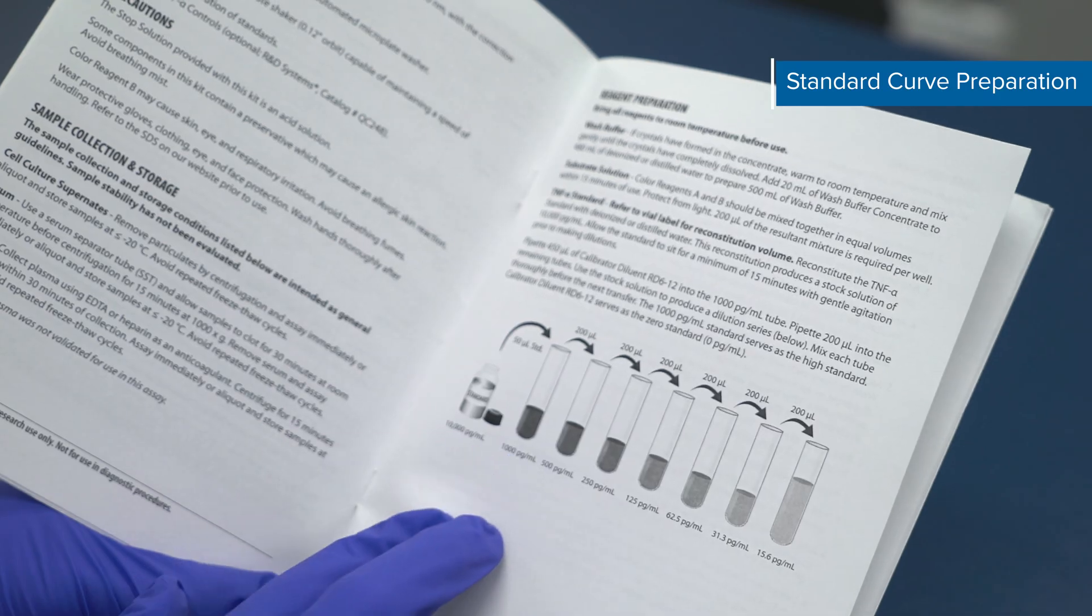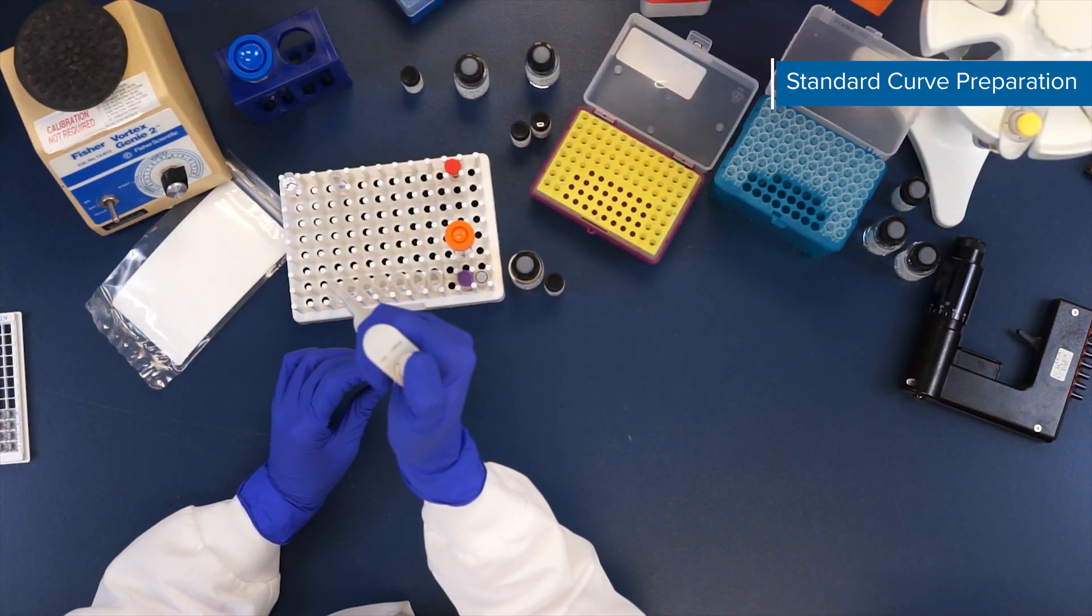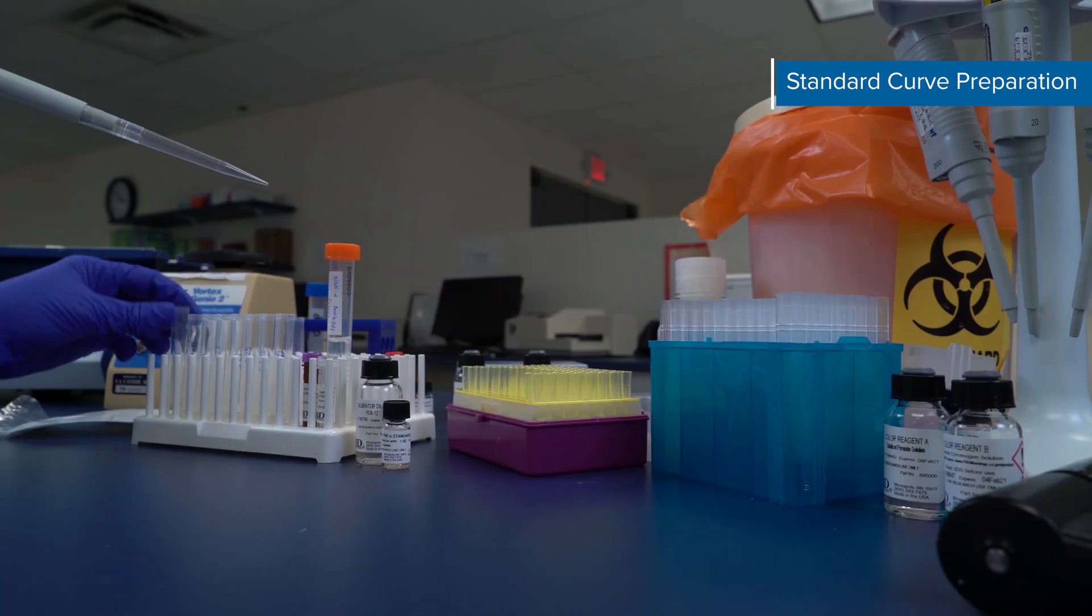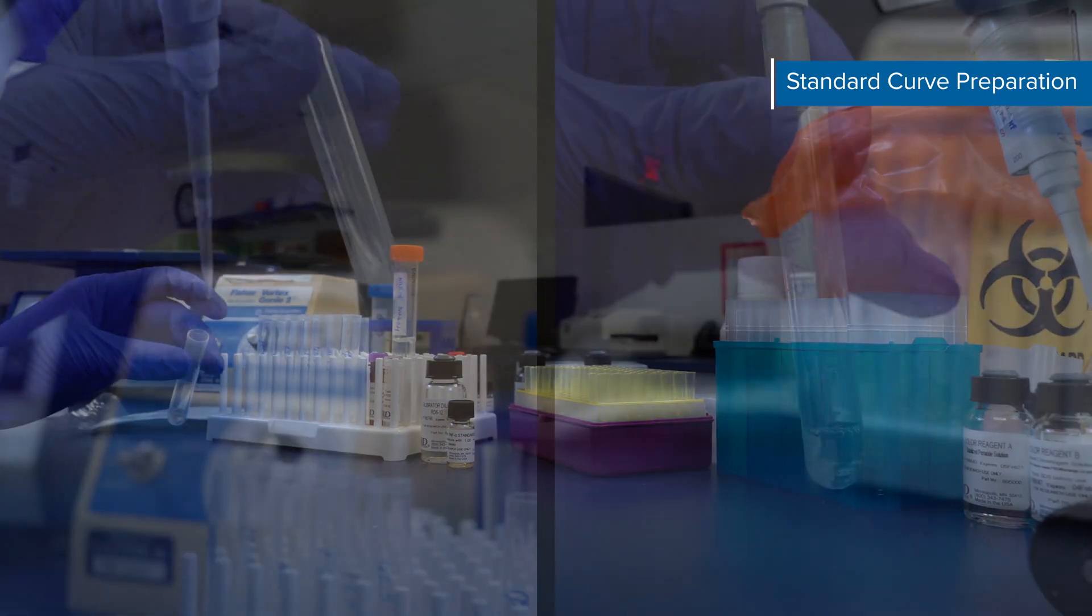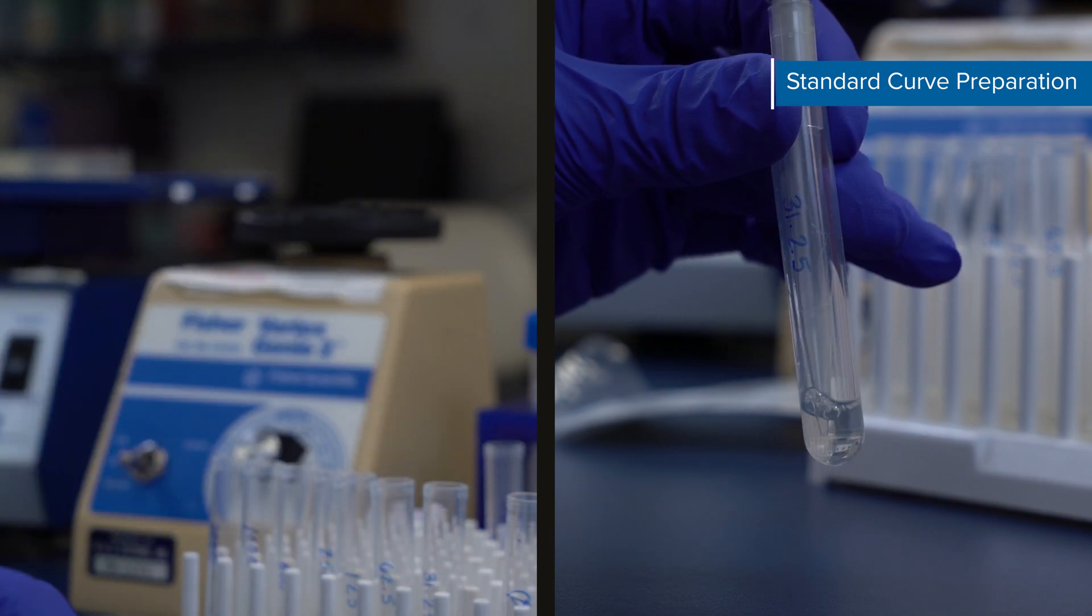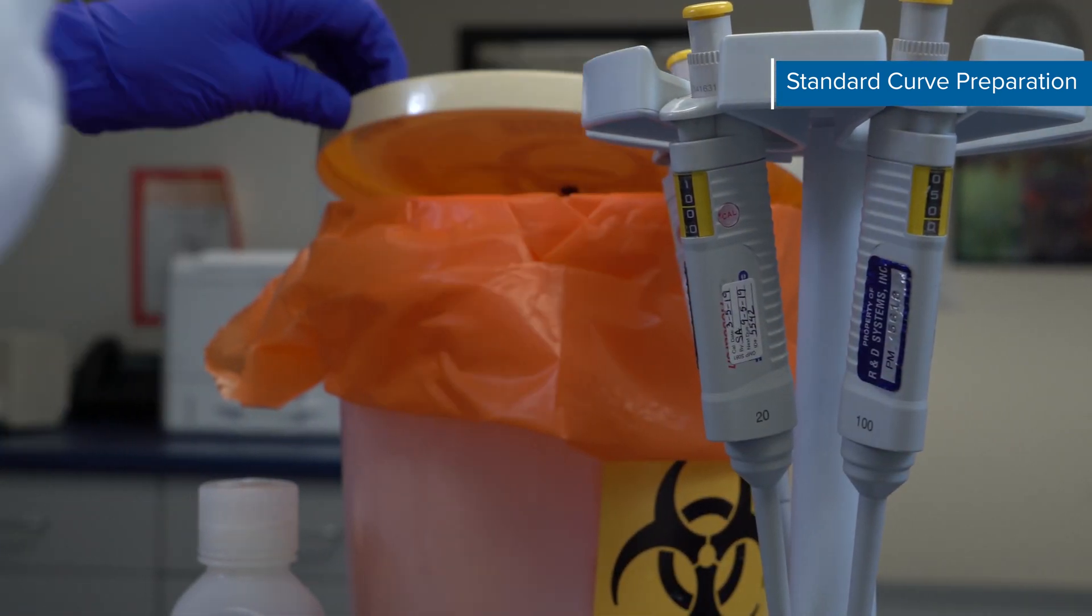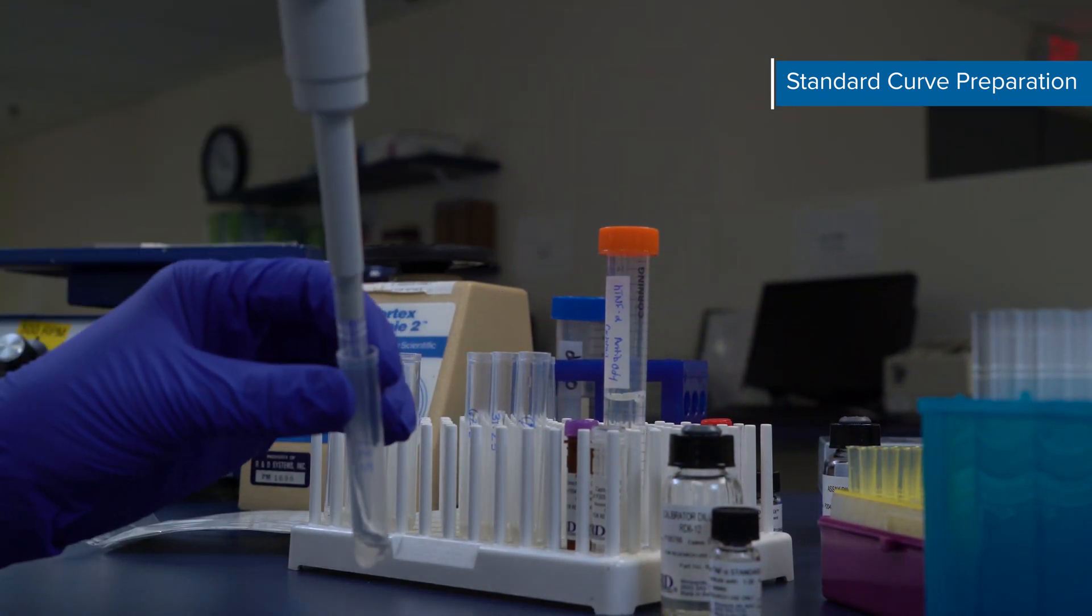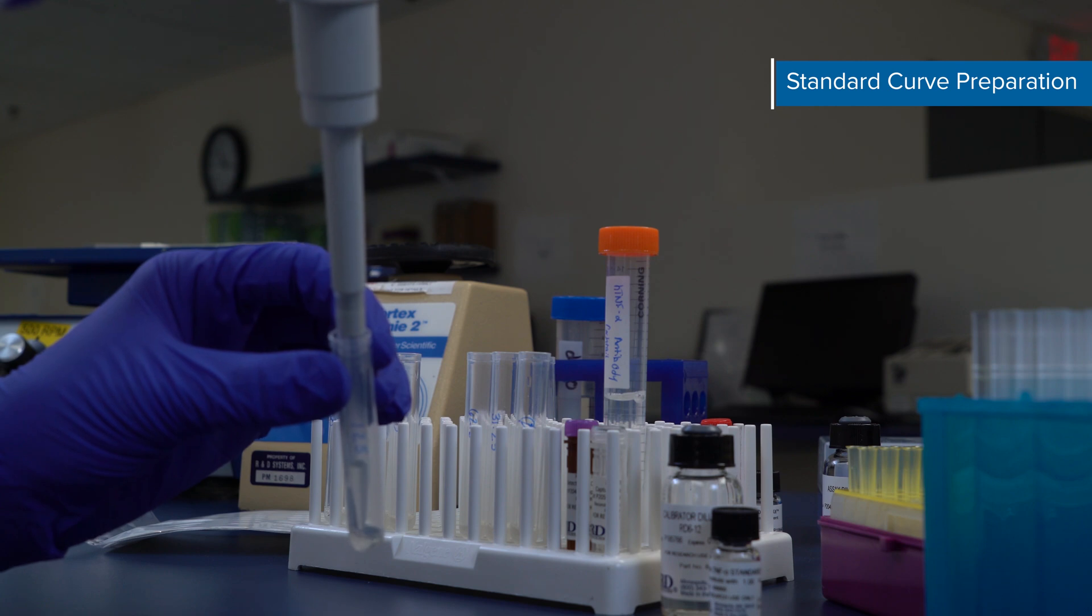Check your kit booklet to ensure you have the right volume and diluent. Next, pipette 200 µL of the appropriate calibrator diluent into the remaining tubes. Use the high standard to produce a 7 point standard curve. Be sure to mix each tube thoroughly by very briefly vortexing. If you don't have a vortexer, you can lightly tap the side of the vial or pipette up and down. Try to minimize foaming and bubbles. Change pipette tips before transferring to the next tube.